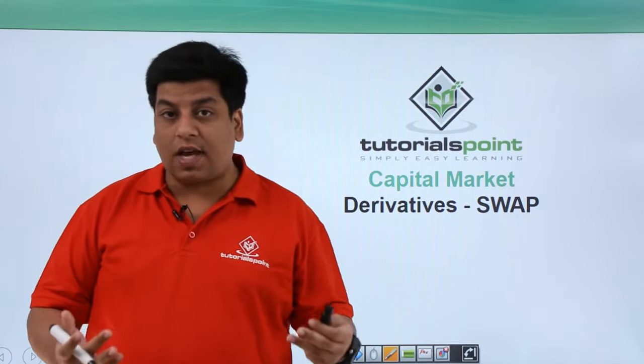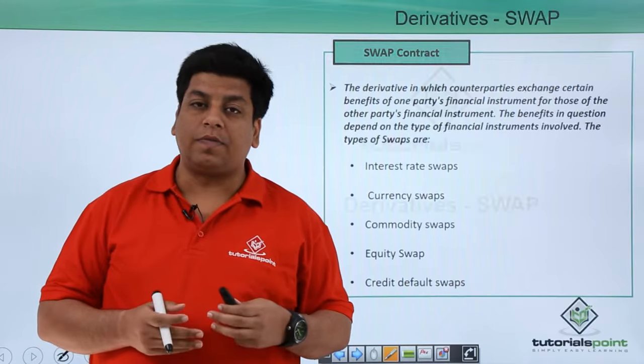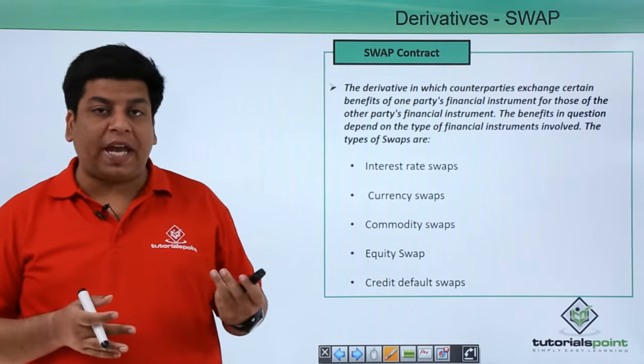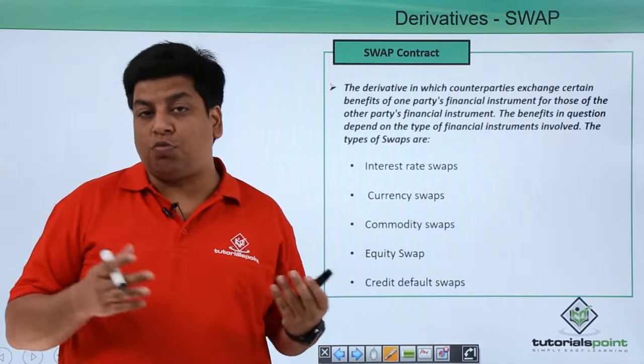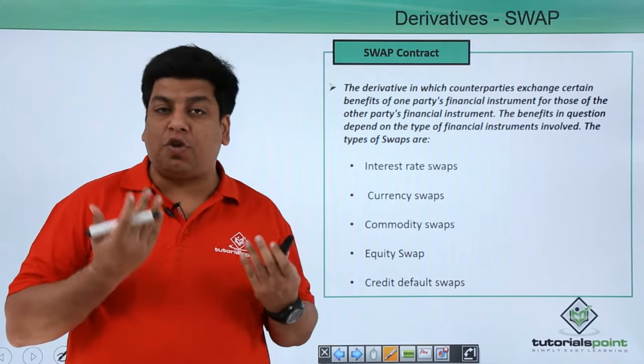Now let's see the next type of derivative, that is swap. Swap can be said that two parties or two or more parties come to an OTC agreement, that is over the counter agreement,